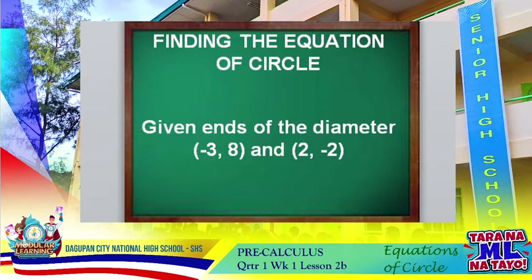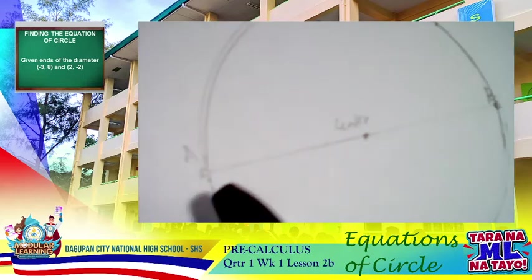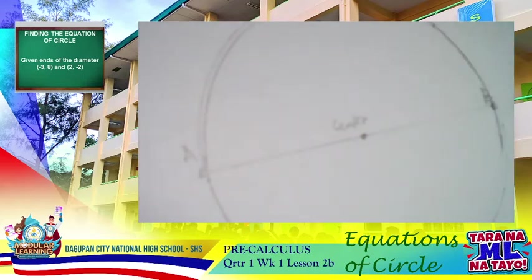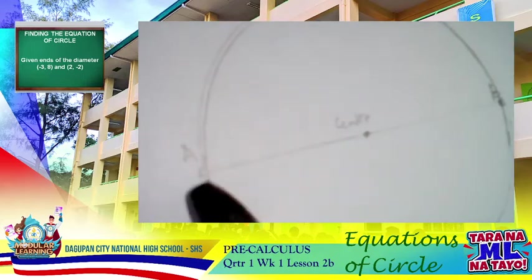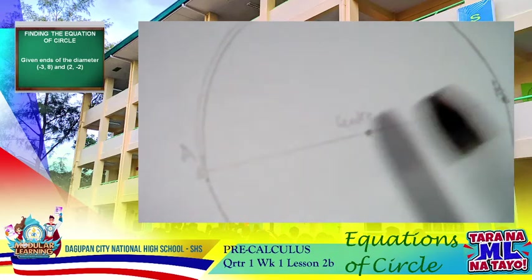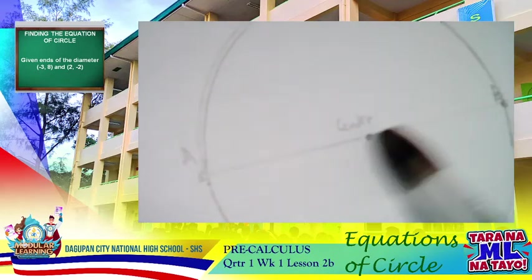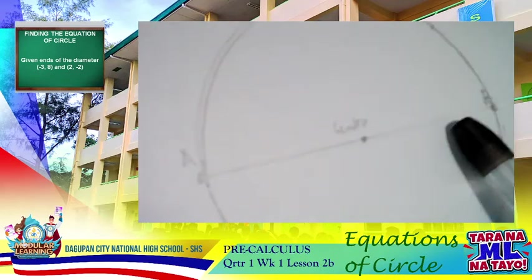I'm going to show the relationship to identify the equation of the circle. There you have the diagram — a circle with a diameter, and the coordinates of this diameter. Once we divide it into two equal parts, we can identify the midpoint or the center, and this becomes our radius.